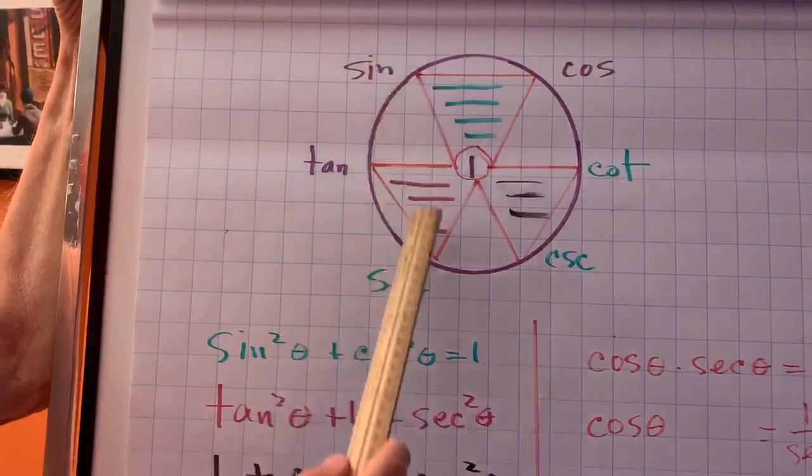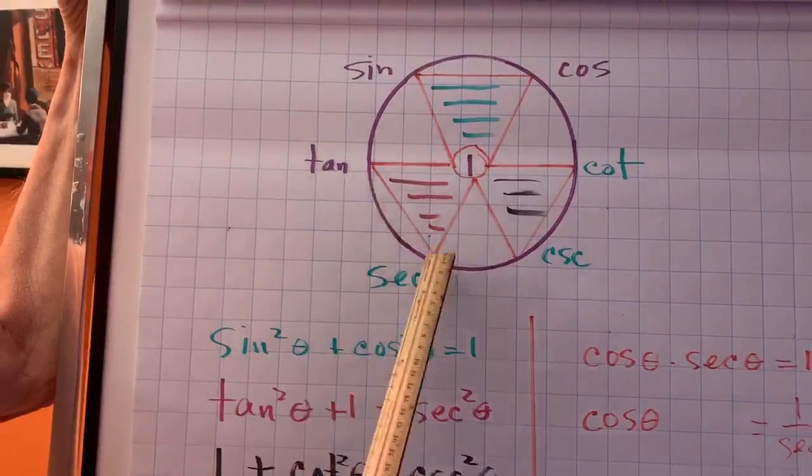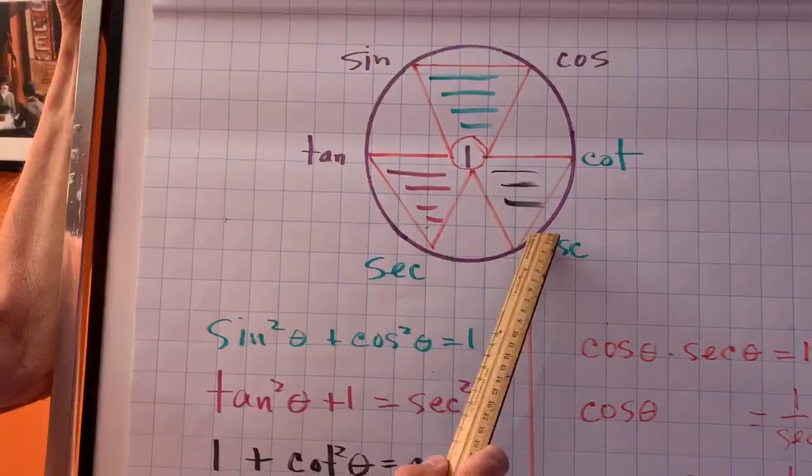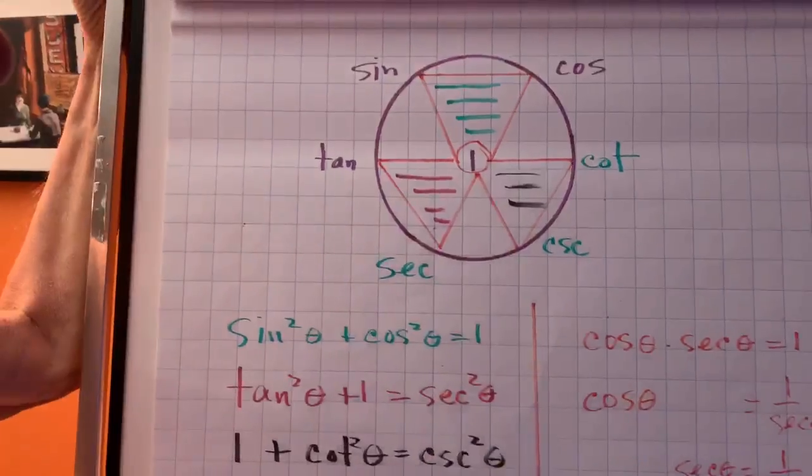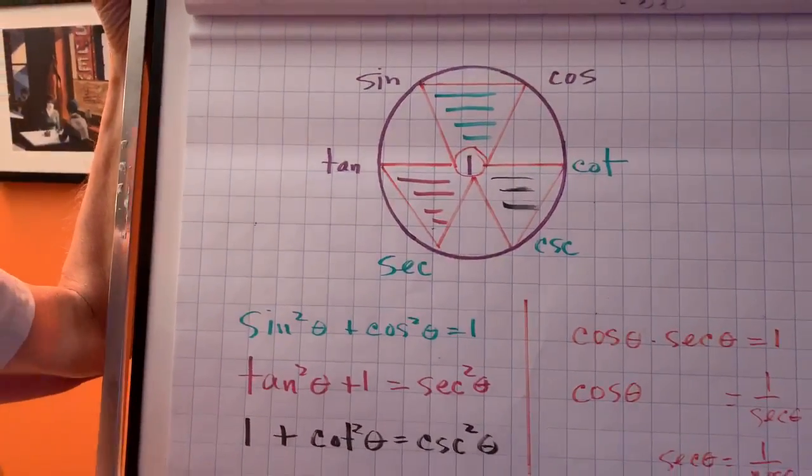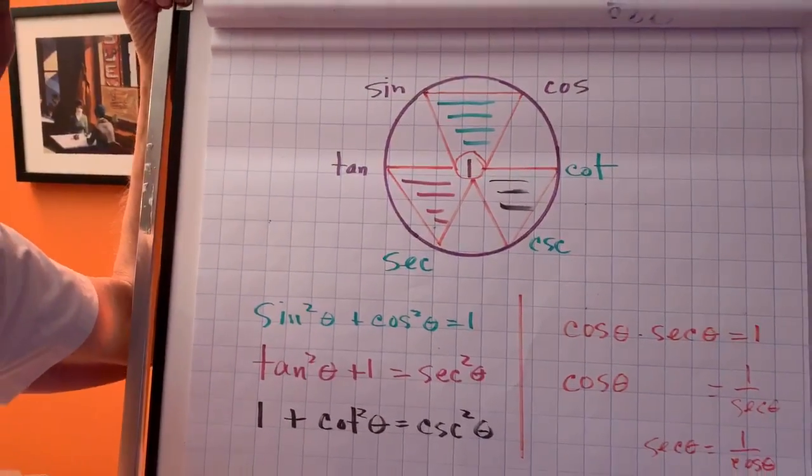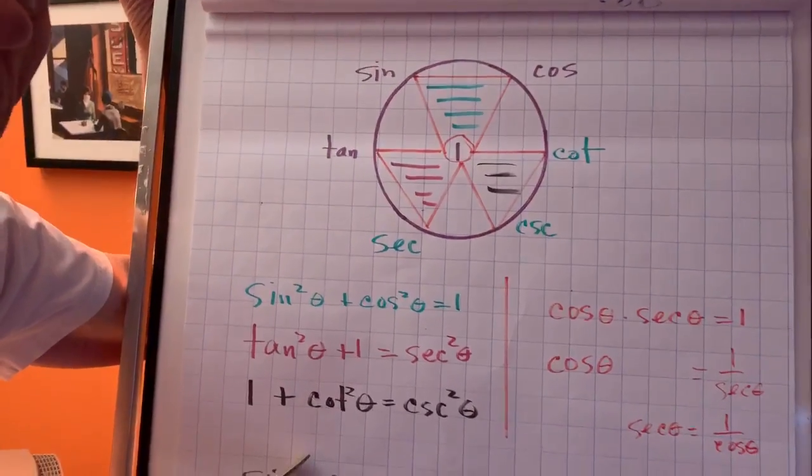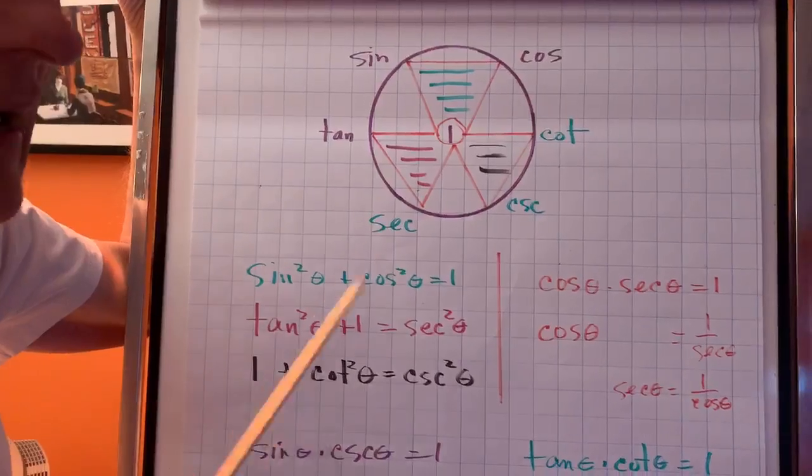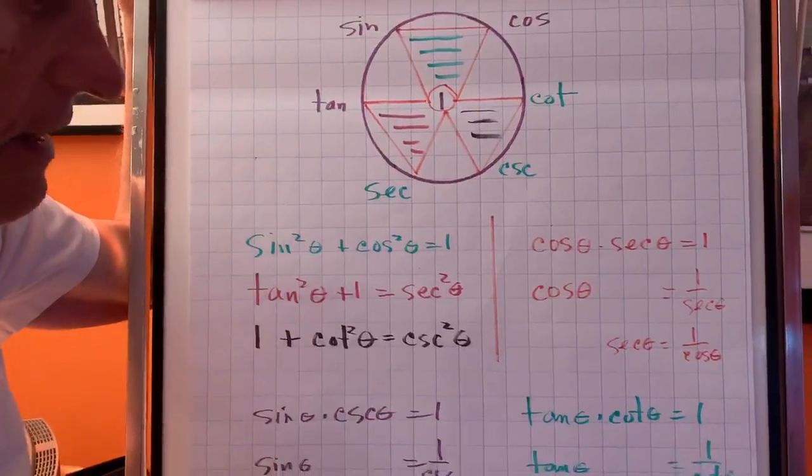Tan is equal to sine times secant. Secant is equal to tan times cosecant. You can run around the circle, you can have a lot of fun with this. This is the most exciting thing I'm ever going to show you in all the lessons I ever do. This is it. I picked this up about over 40 years ago. I hope you get a chance to see it and enjoy it.